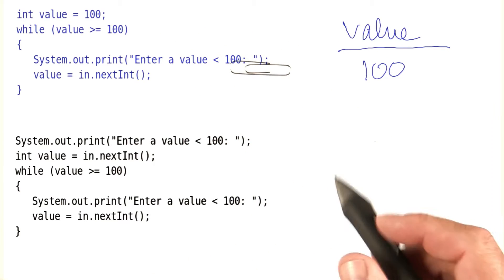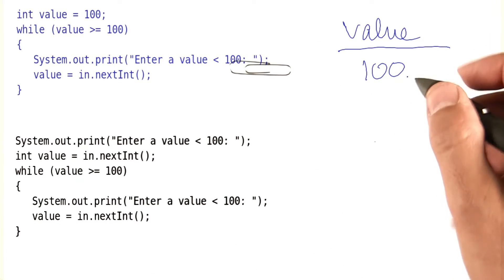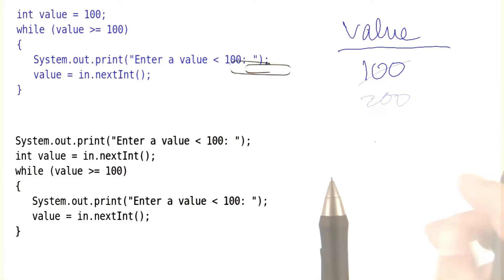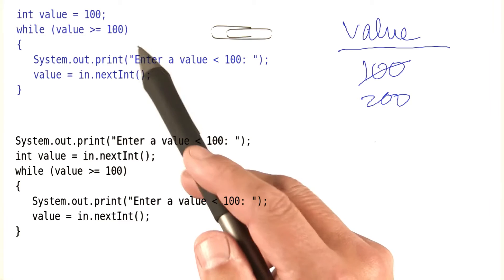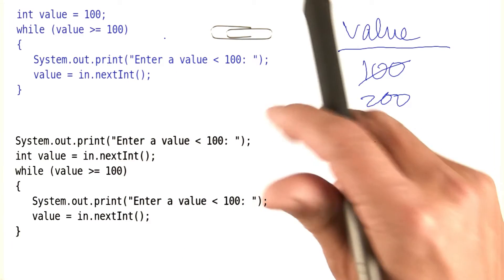We ask the user to enter a value. Let's say the user is uncooperative and enters 200. Then we go back up. Now the value is still greater or equal than 100, and we go back in the loop.